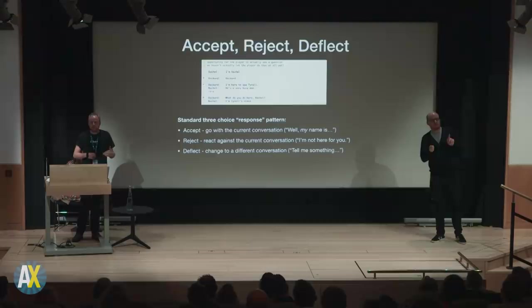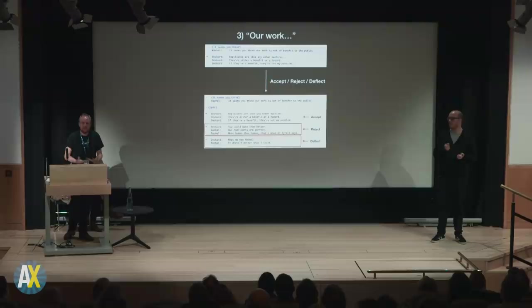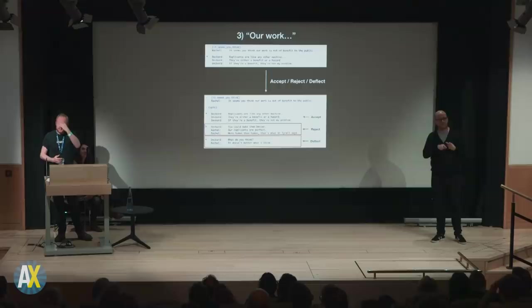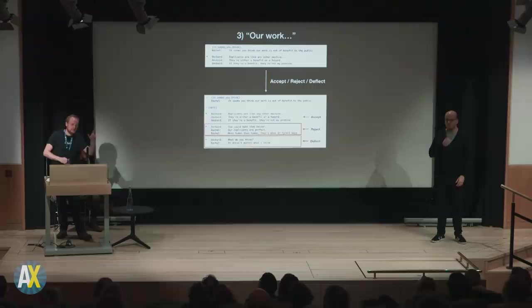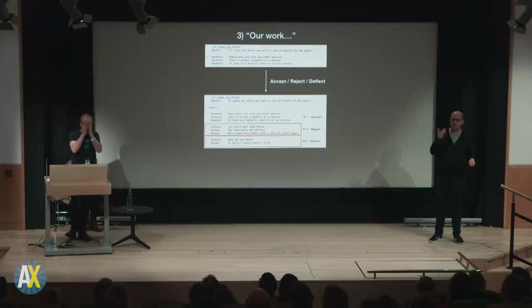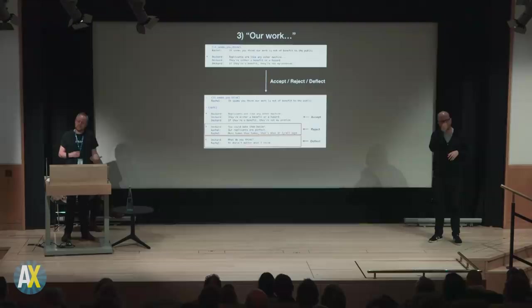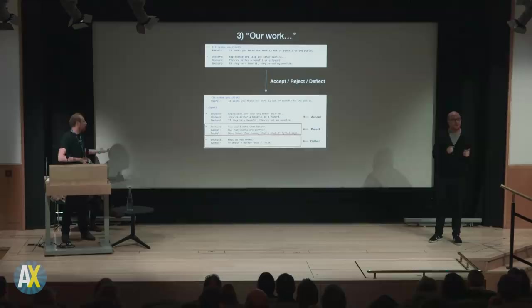I think this is ridiculously powerful and very easy to do when you don't have any ideas. The next line — 'it seems our work is not a benefit to the public' — the accept line is Deckard's speech about replicants being like any other machine, which is one of the worst lines in the whole film. The reject line is something like 'your work's rubbish.' The deflect is 'well, what do you think?' But more importantly, since this is an argument: if I reject her, she's going to buff up and say 'no,' and boot me straight back to the top of the loop. I get the same conversation options again. And I know, as a player, that my attack didn't work — I have been overpowered.